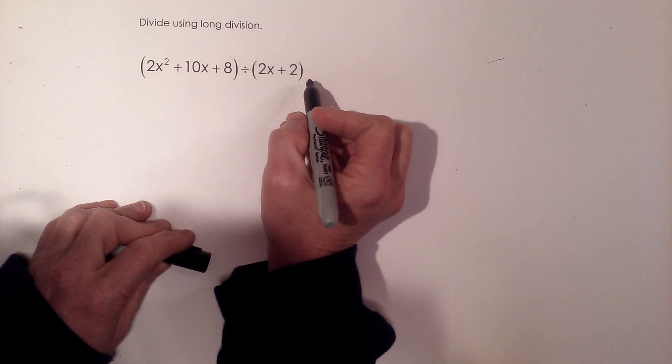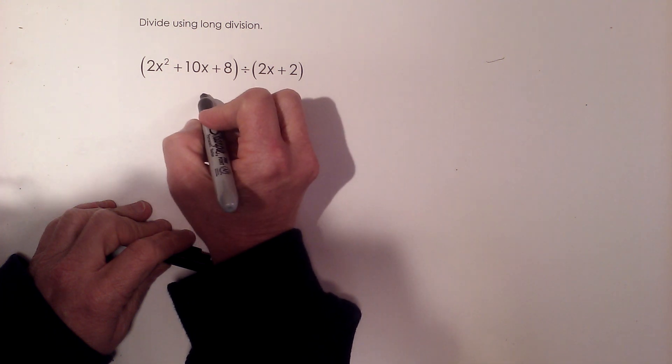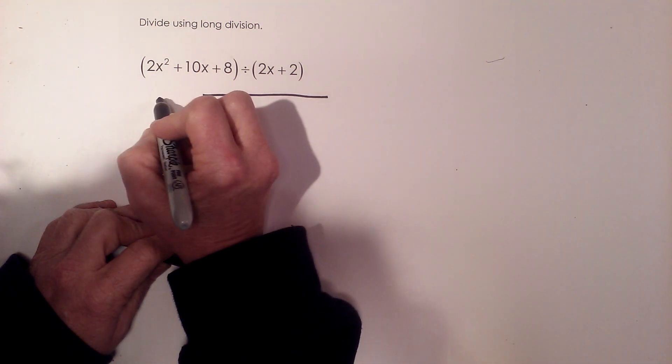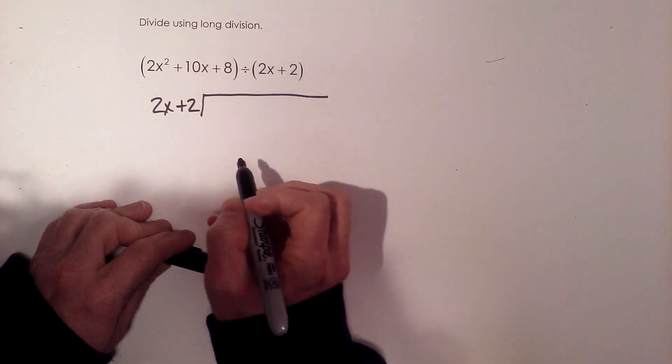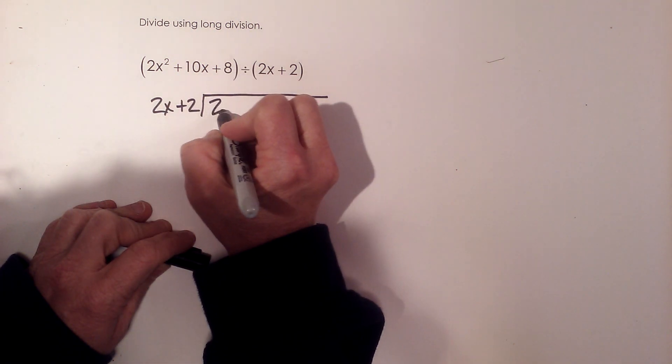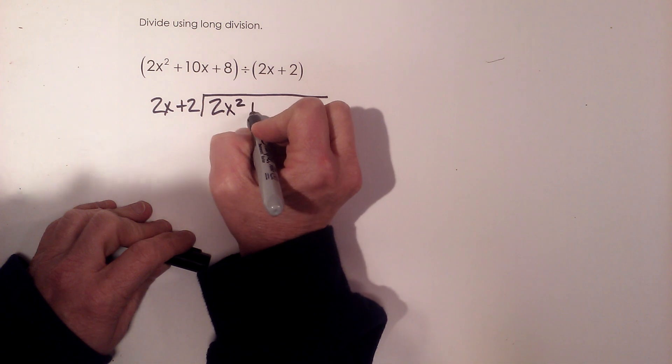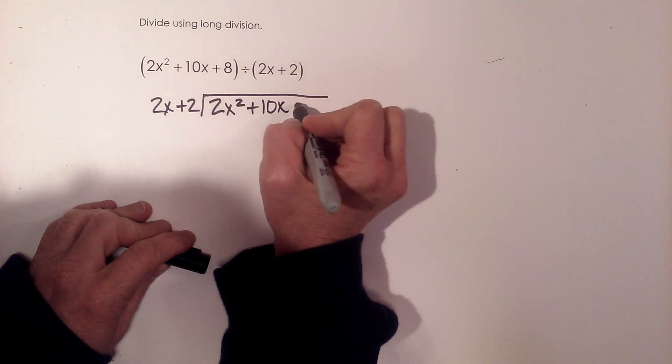Here we've got a problem where we have a quadratic divided by a linear term. We're going to set this up just like a division problem you would have with numbers. I'm going to put 2x plus 2 on the outside as my divisor, and then on the inside I'm going to put 2x squared plus 10x plus 8.